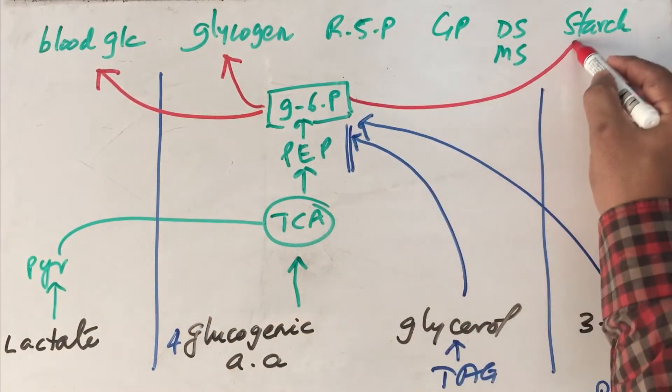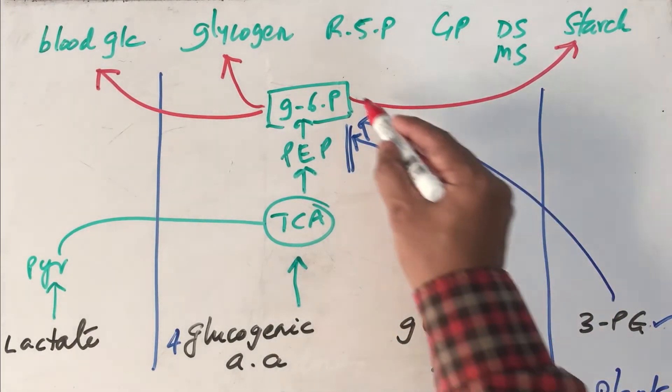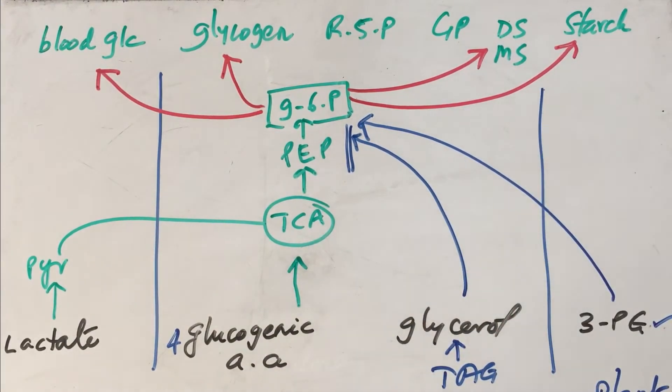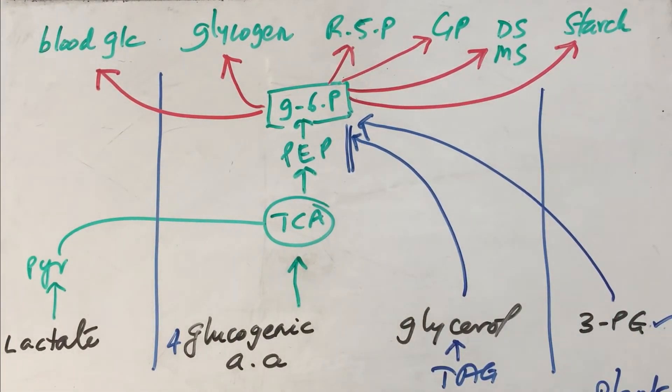Glucose 6-phosphate can be converted to starch and stored in plants. Glucose 6-phosphate can be used for synthesizing many disaccharides and monosaccharides. It can be used for making several glycoproteins for specialized synthesis. And another function of glucose 6-phosphate will be to synthesize ribose 5-phosphate.